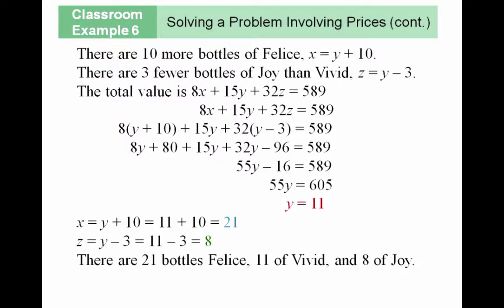So now we have our three equations and three unknowns. To solve for this, we can use either of those methods that we learned. So the total value is 8X plus 15Y plus 32Z equals 589.